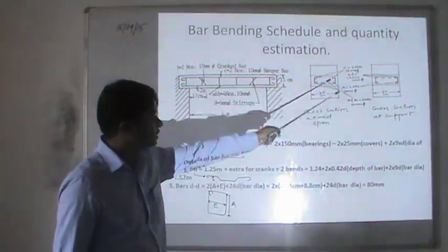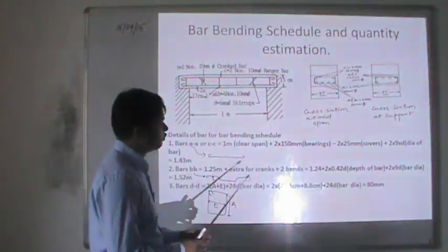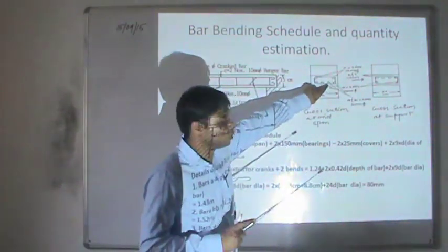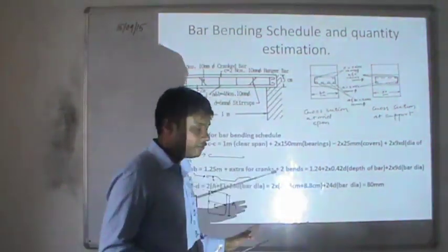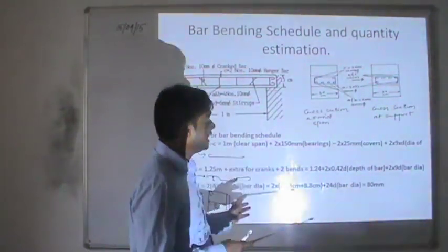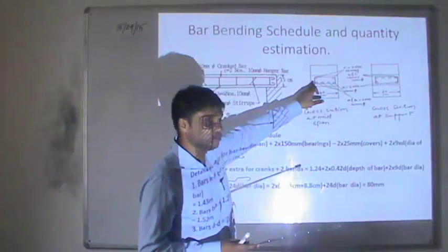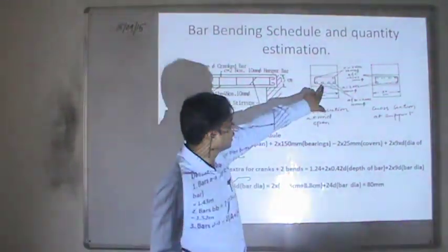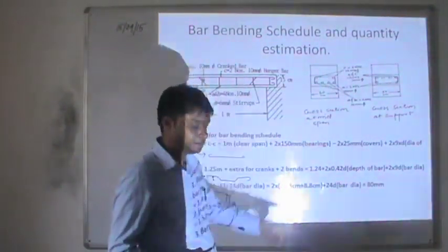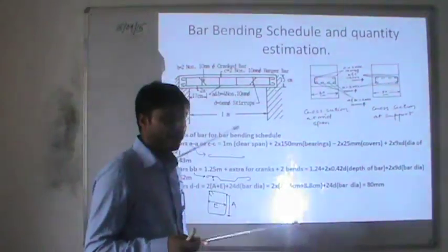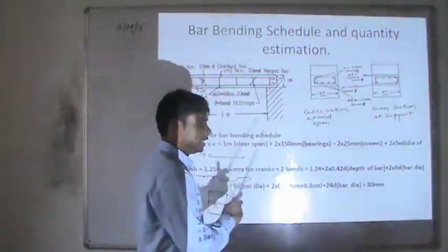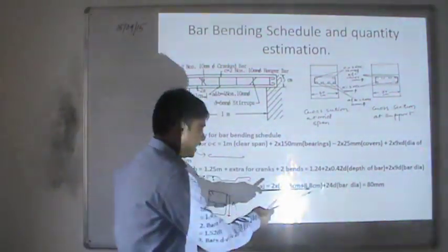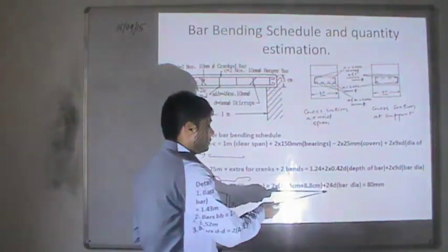For this example, A is calculated as 300 mm minus 2 × cover (2 × 25 = 50 mm), giving 250 mm, then minus 12 mm for the bar diameter, resulting in 238 mm. Similarly, E comes out to be 88 mm. The extra length is 24D where D is the bar diameter. So the total length of the stirrup is computed as 2 × (23.8 + 8.8) + 24D.